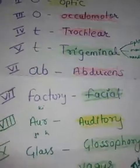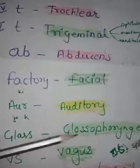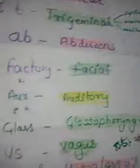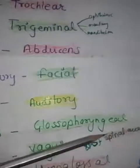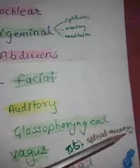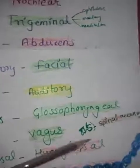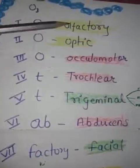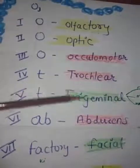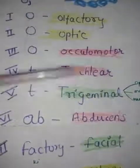The ninth cranial nerve is glossopharyngeal. V stands for vagus, S for the eleventh cranial nerve which is spinal accessory, and 'glossal' stands for hypoglossal nerve. So this is the mnemonic I prepared for myself and I am sharing it with you: O, T, T, T, Ab, Factory — covering all twelve cranial nerves.